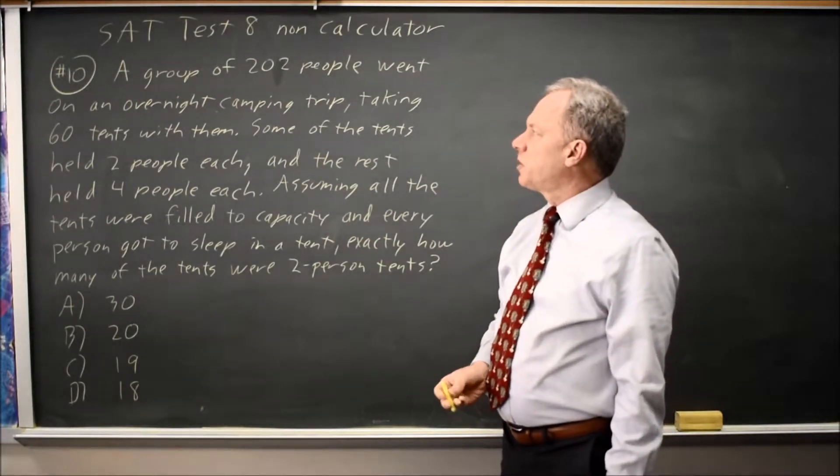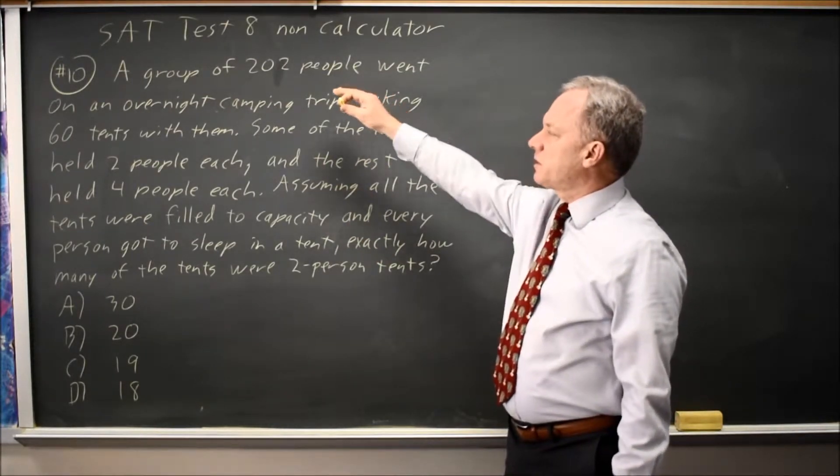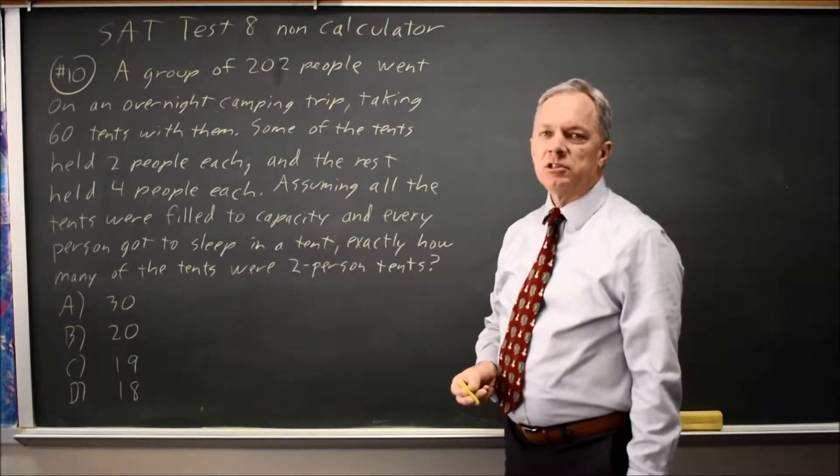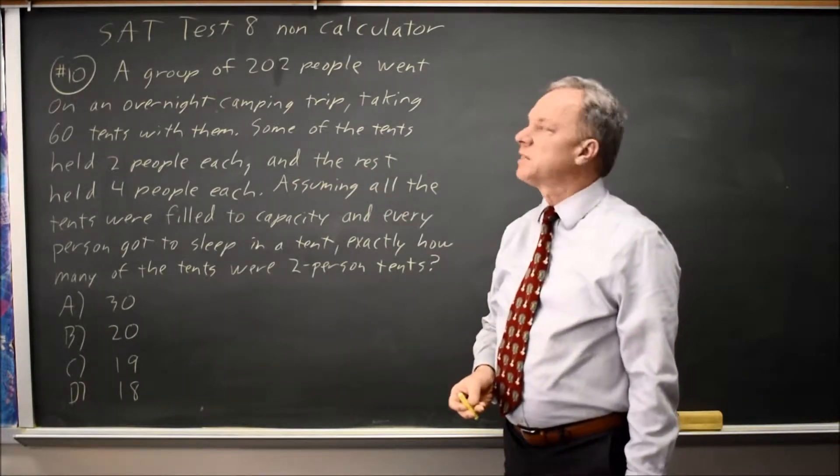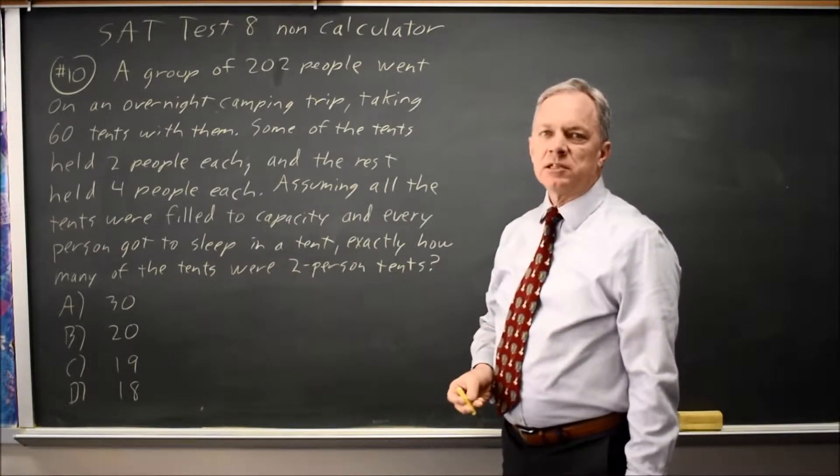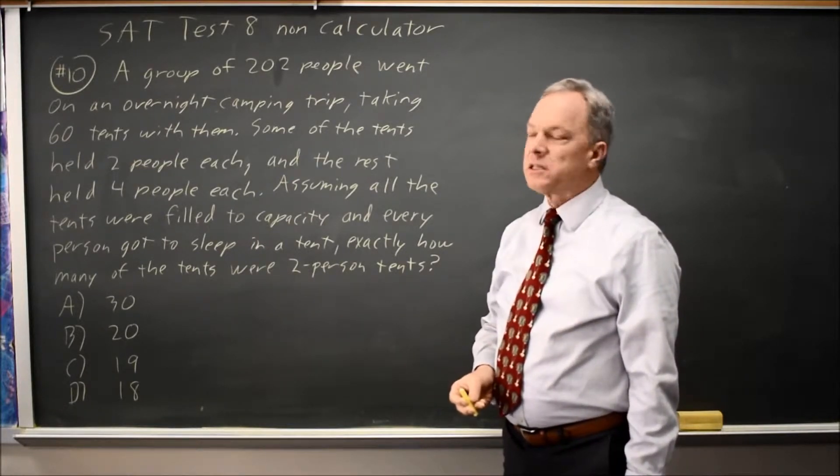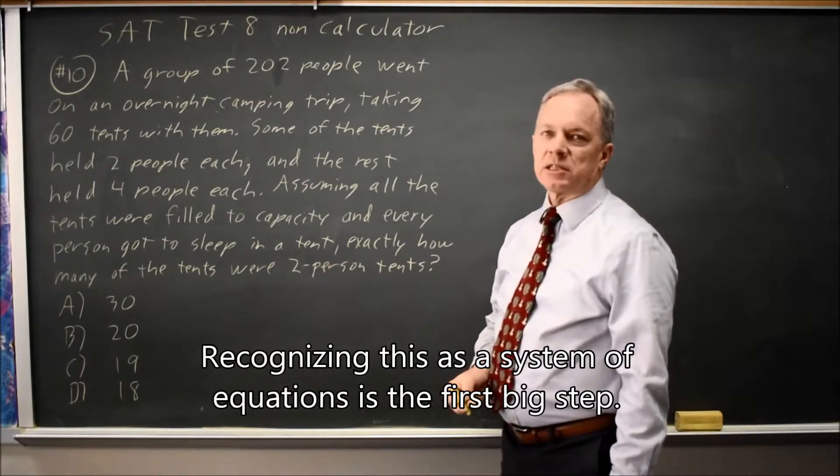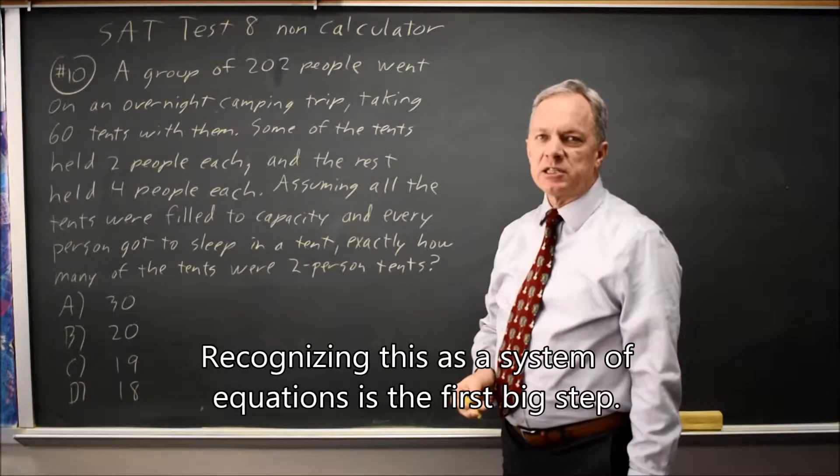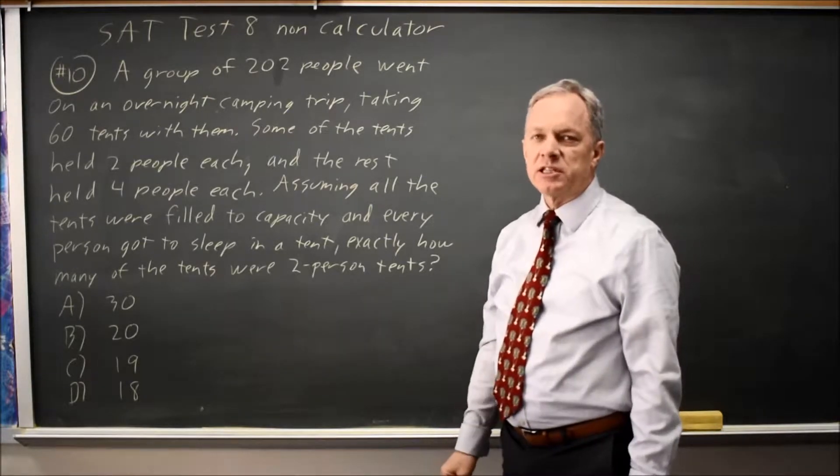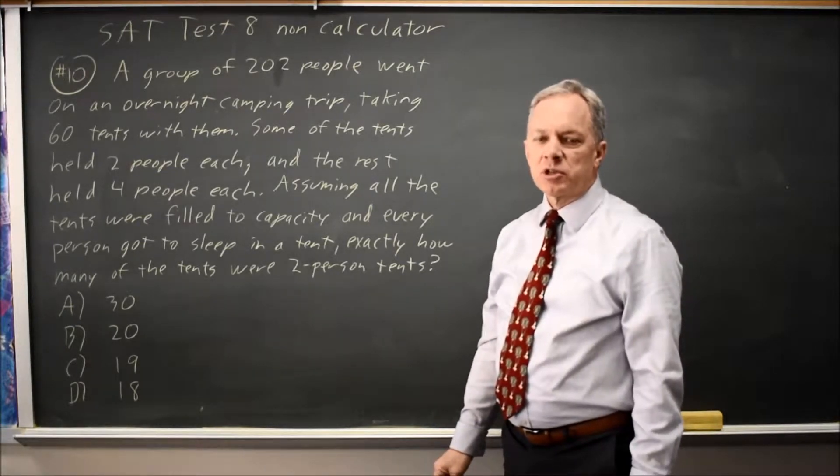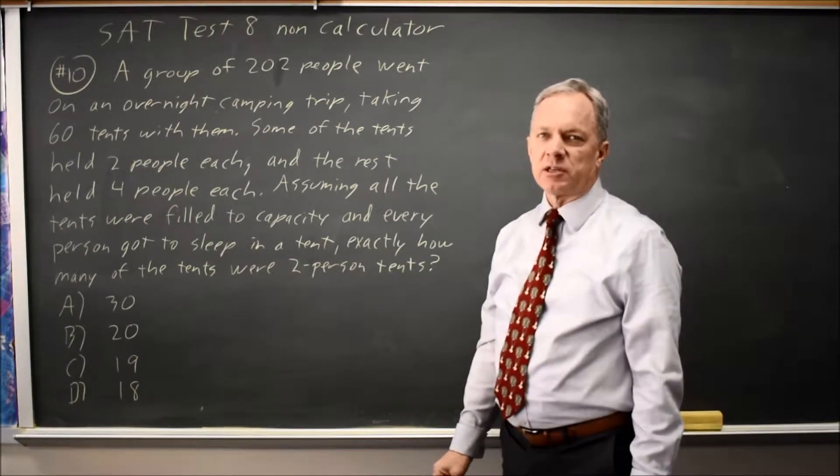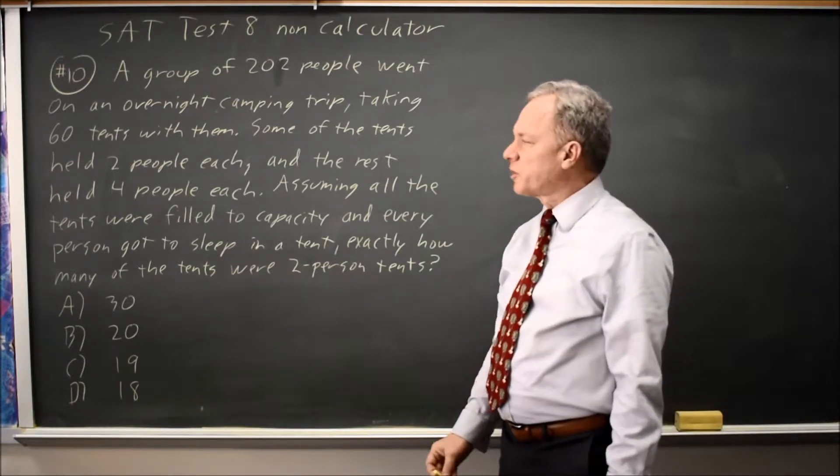We know the total number of people housed in these two-person tents and four-person tents is 202. We know the total number of tents is 60. Since we have two statements involving these tents and people, that would be a system of equations. College Board asks typically six system of equations questions on each test, so it's worth practicing these and making them a priority. It's worth extra time to relearn systems if you're preparing for the SAT.